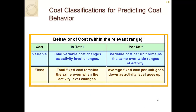Another very important concept is cost behavior within a relevant range — specifically whether a cost is fixed or variable. Variable means the total variable cost changes as activity level changes. For example, the number of steering wheels changes with the number of cars produced, whereas the building does not. We could produce 10 cars or 5,000 cars and the building cost stays the same — that's why we say within a relevant range, because at some point we may need to buy another building. In total, variable costs change with the number of cars manufactured, while fixed costs remain the same regardless of activity level.